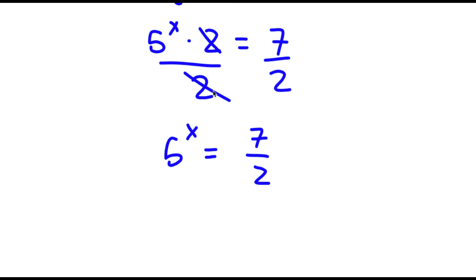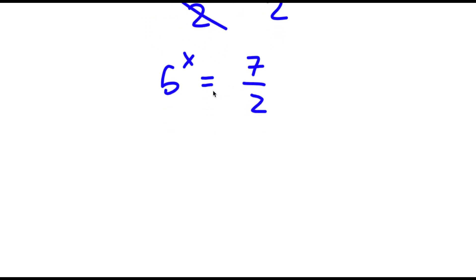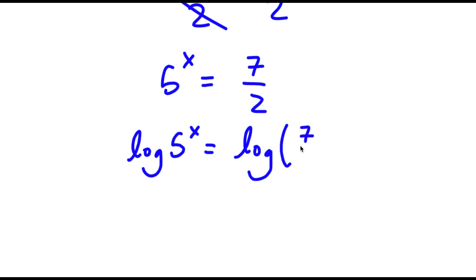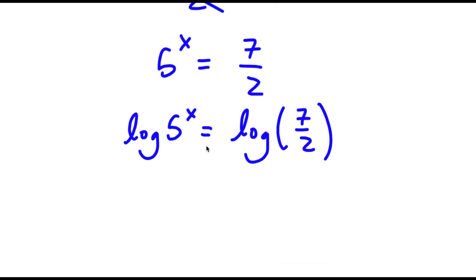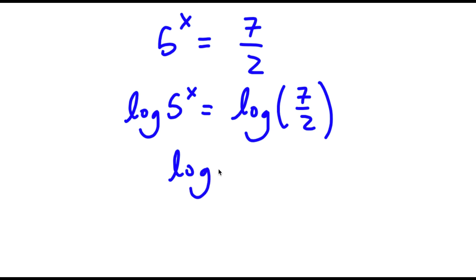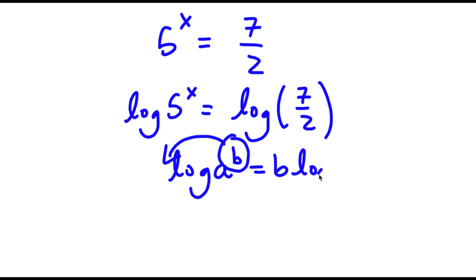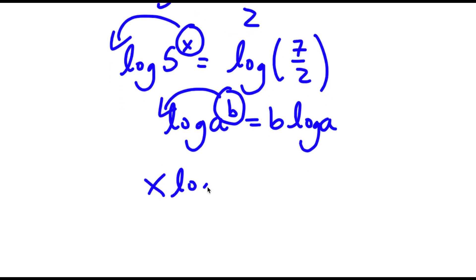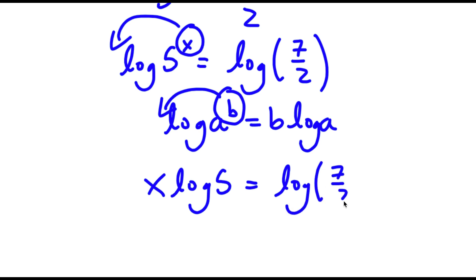From here, I'm going to take the log on both sides. So now I have log 5 to the power of x is equal to log 7 over 2. Now if I have something in the form log a to the power of b, I can move b to the front, so it equals b times log a. In this case, I have log 5 to the power of x, and I can move x to the front. So now I have x times log 5 is equal to log 7 over 2.